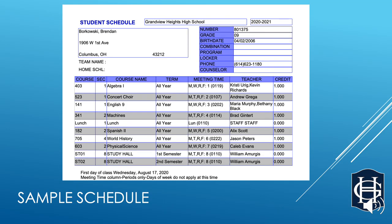Here is what a sample schedule looks like. Your name and address should appear in the upper left-hand corner. Additional student information is in the upper right-hand. The bottom part is your schedule, and I'll break down each column for you.